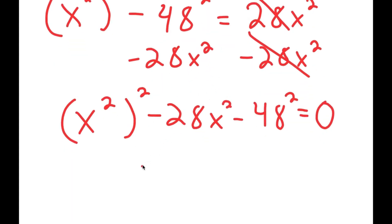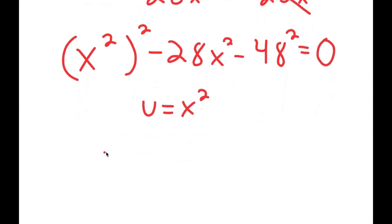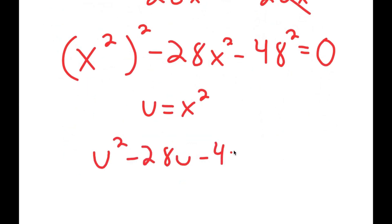Now I'm going to set u equal to x squared, so I get u squared minus 28u minus 48 squared is equal to zero.